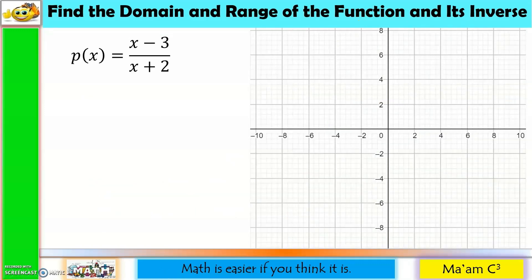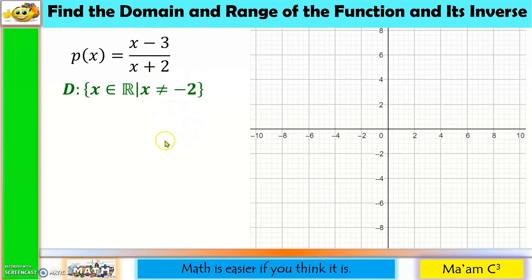One more: p(x) = (x − 3)/(x + 2), a rational function with a variable in the denominator. Setting x + 2 = 0 gives x = −2, which we exclude from the domain. So the domain is all real numbers except −2. For the range, since the leading coefficients of numerator and denominator are both 1, the horizontal asymptote is y = 1, which we exclude from the range. So the range is all real numbers except 1.